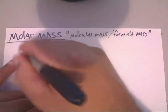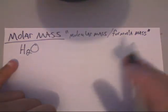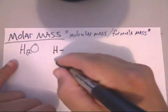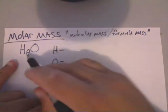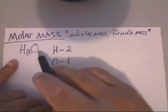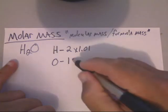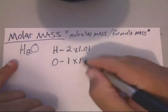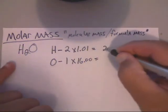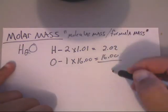Let's say they give you water, which is H₂O. To begin, you just make what I'll refer to as a grocery list of the atoms that you have. You have hydrogen and you have oxygen. Hydrogen — you've got two of those, so you put a two. Oxygen — you've got one of those, so you put a one. There's a one there because you don't see it. Now, hydrogen on the periodic table is 1.01, and oxygen on the periodic table is 16.00.